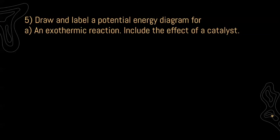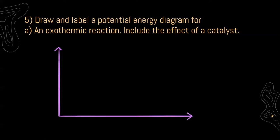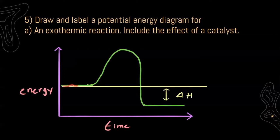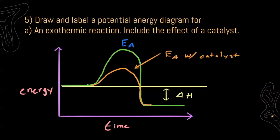For 5 it says draw and label a potential energy diagram for an exothermic reaction and we have to make sure to include the effect of a catalyst. On my x-axis I'm going to have time and on my y-axis I'm going to have energy. This is going to be an exothermic reaction because we see the energy where we started off with our reactants and the difference where we ended up with our products — that energy is released out into the surroundings. At our peak we're going to have our activation energy — the energy required for our reaction to start. Now with a catalyst, our activation energy is lowered significantly, meaning the amount of energy we need to put in for this reaction to occur is a lot less than without the catalyst.